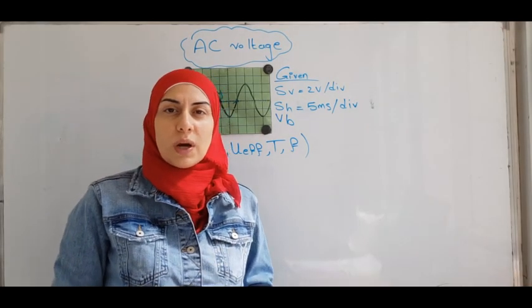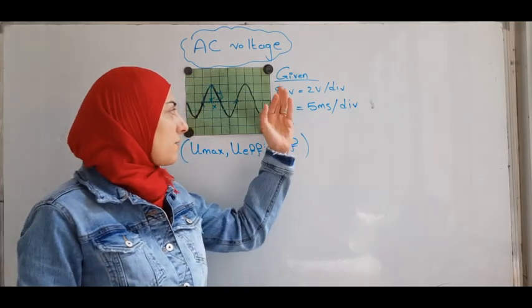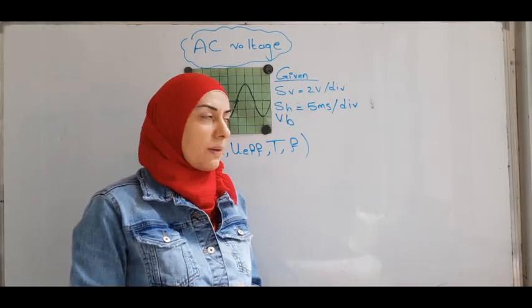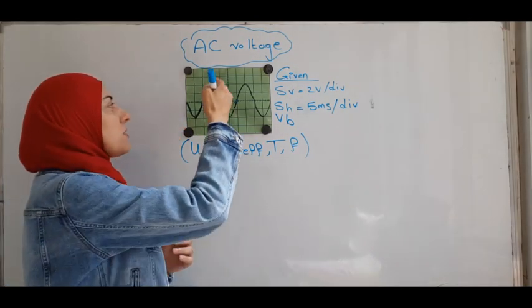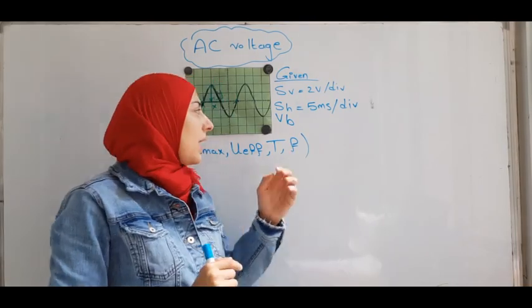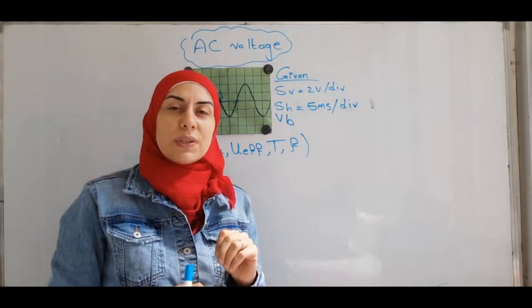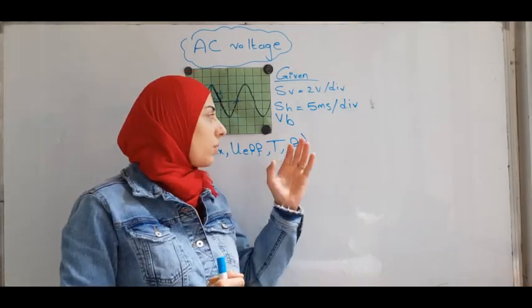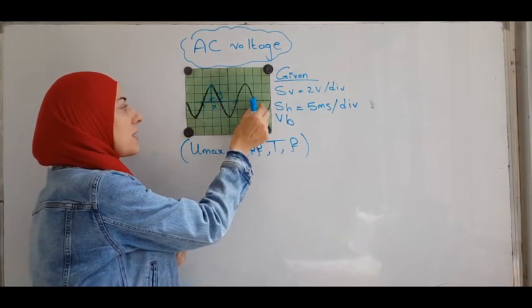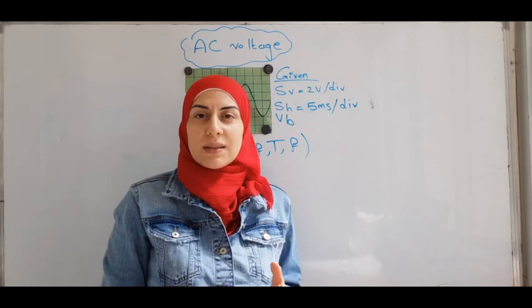In addition to X and Y, you're most probably given SV and SH. SV is the vertical sensitivity. The vertical sensitivity means on the vertical axis, each division is sensitive to how many volts. SH is the horizontal sensitivity. It's also called the time base, or VB. It means that each division on the X axis is sensitive to how many milliseconds or seconds.